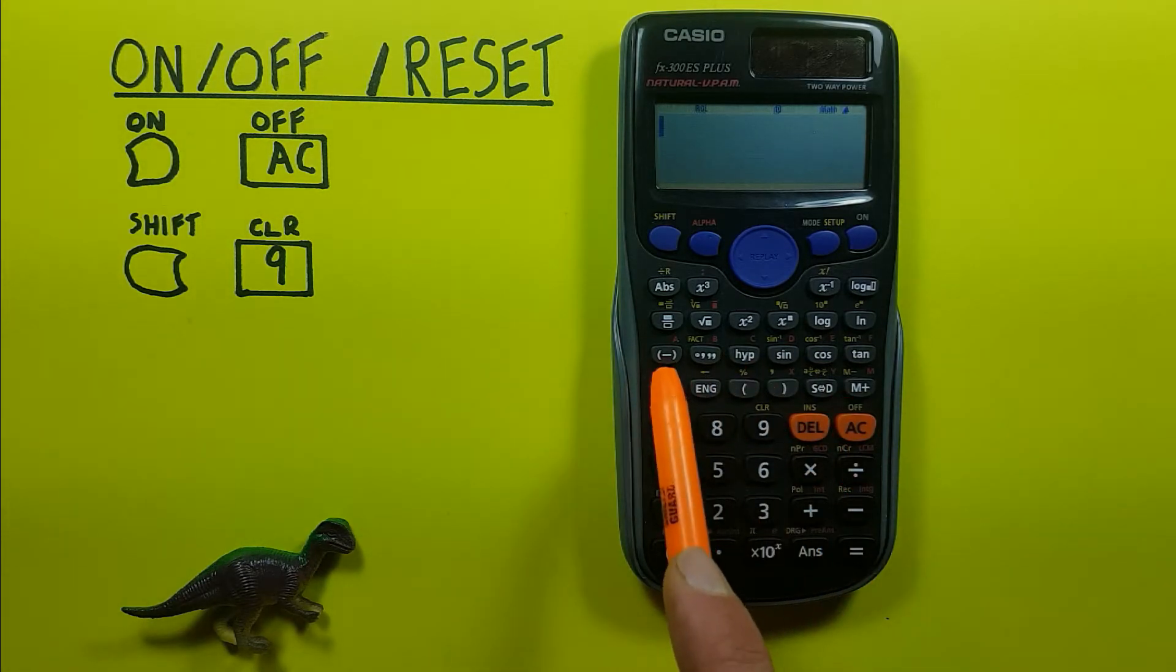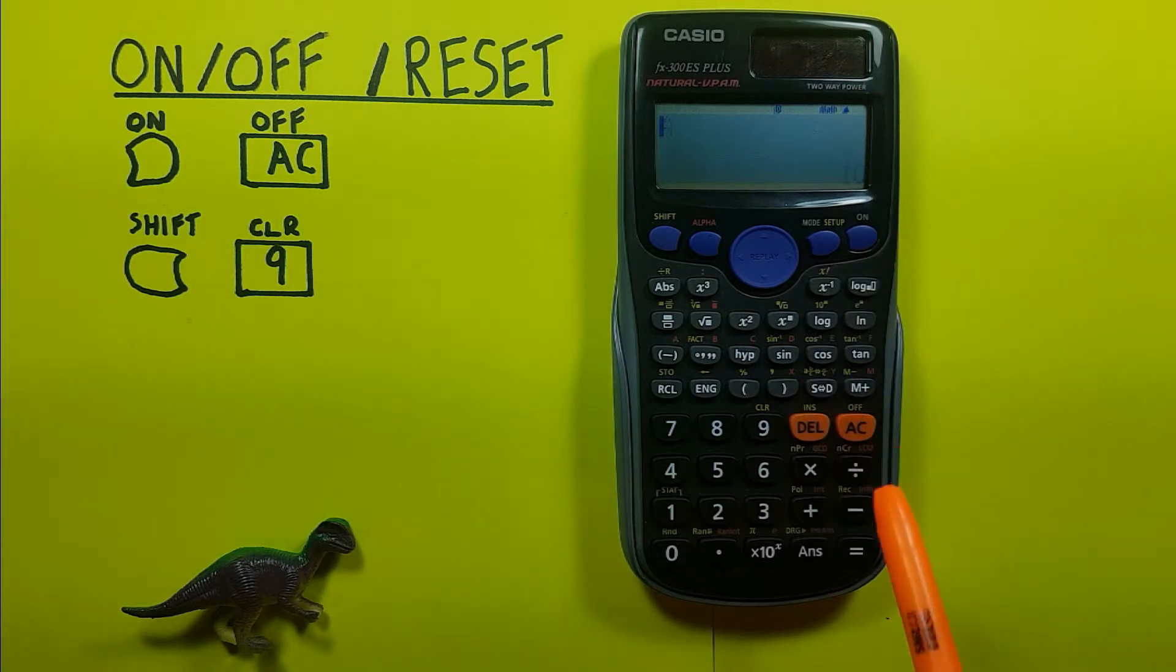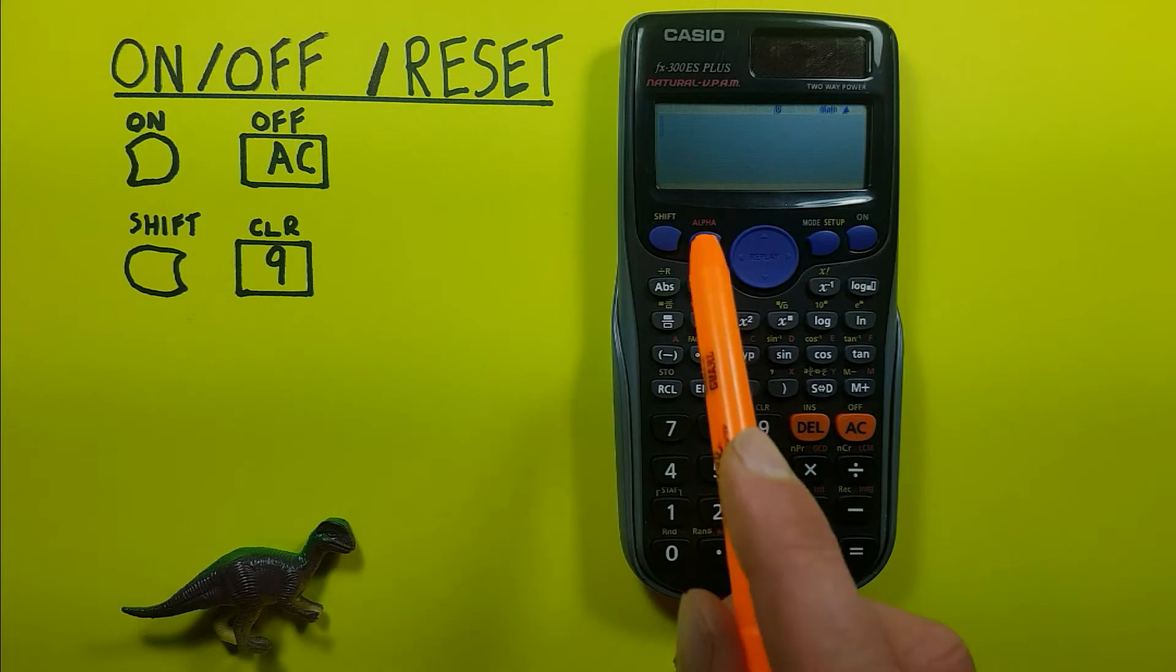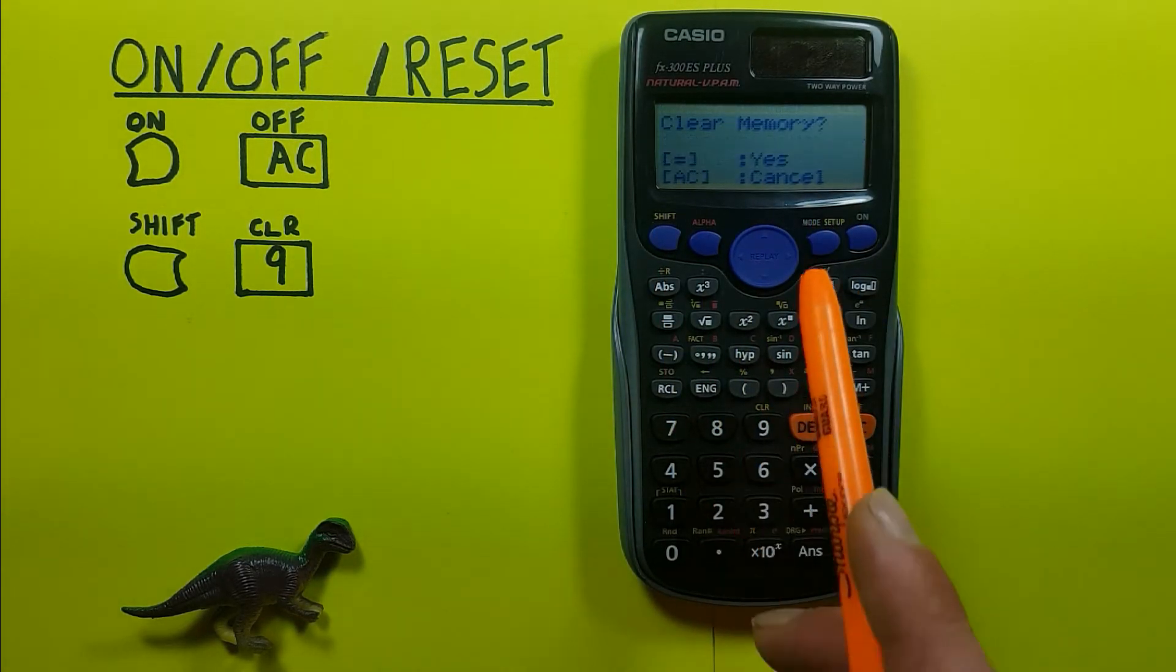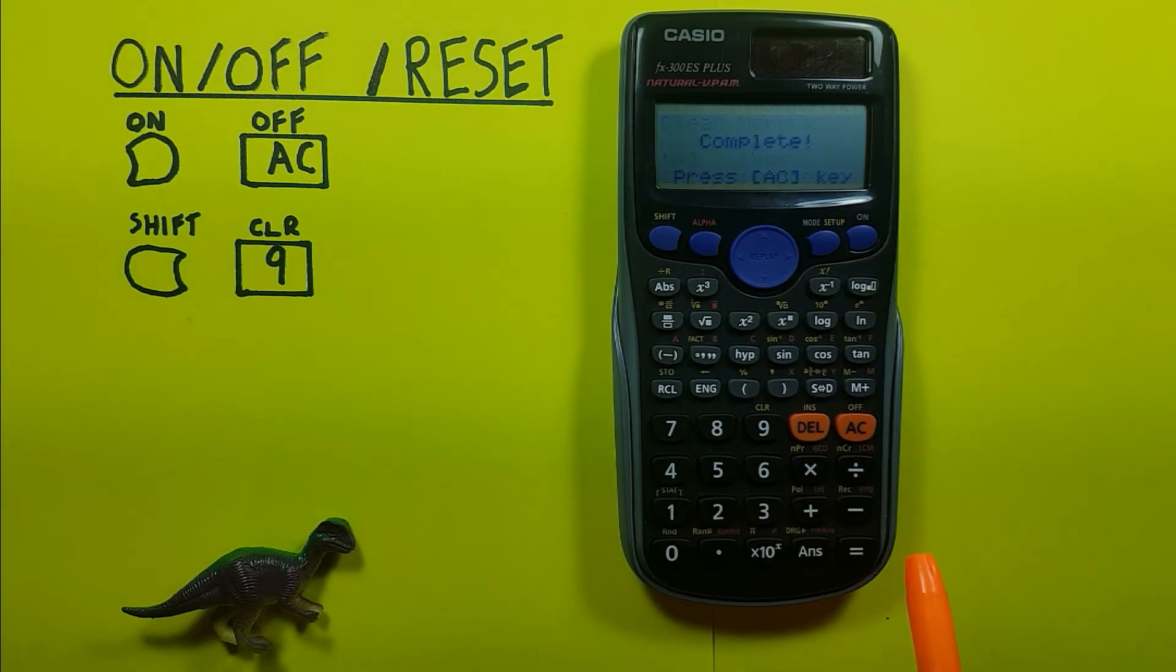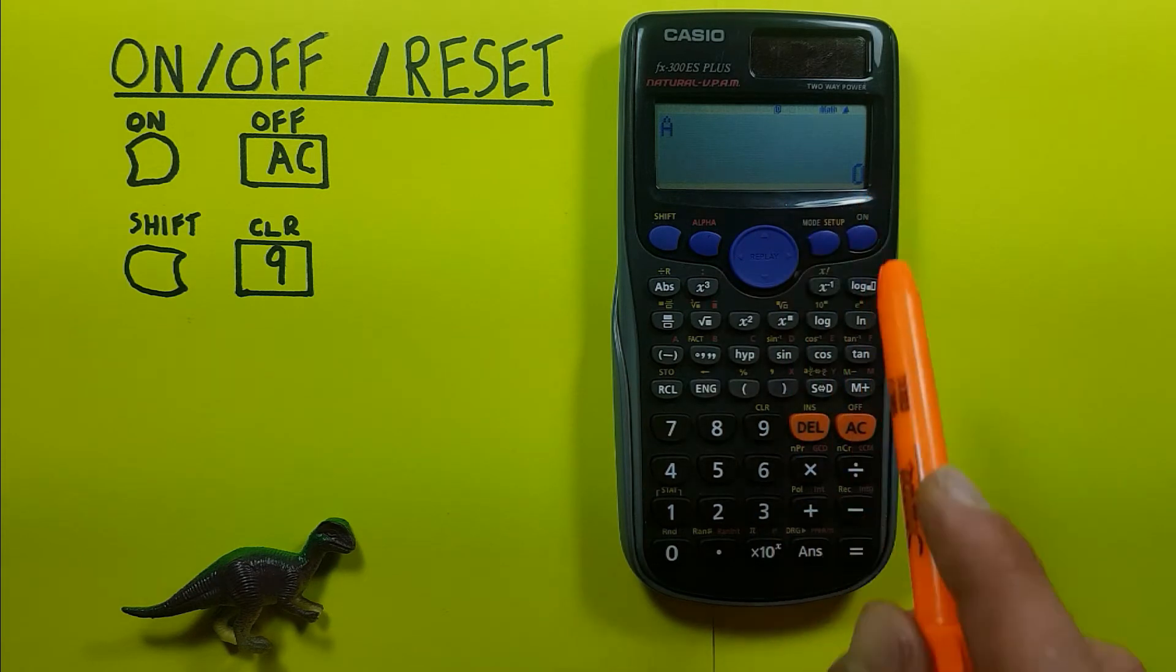You can see here if we recall A, we have ten stored there. If you want to clear all these memory slots easily, again you go back to that reset menu, hit number two for the memory, equals for yes. It'll say complete, and then if we try to recall our memory, we can see now there's zero in all our slots.